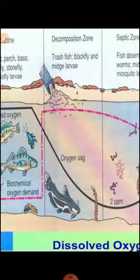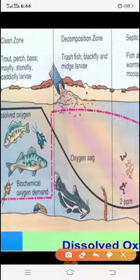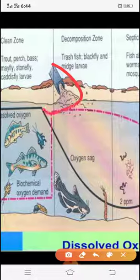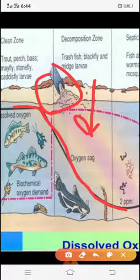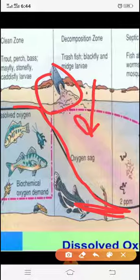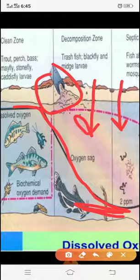When the pollution load enters from the source into the water bodies, the first thing observed is that the oxygen level depletes. This is because microbes become active and utilize more oxygen. At the same time, there is some entry of oxygen from the surface as well.